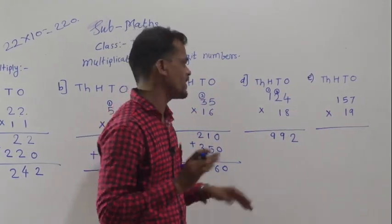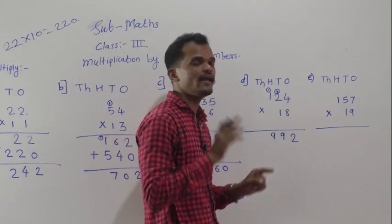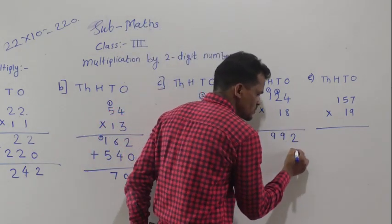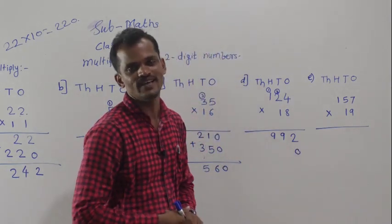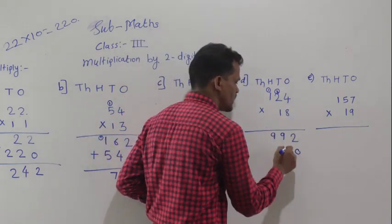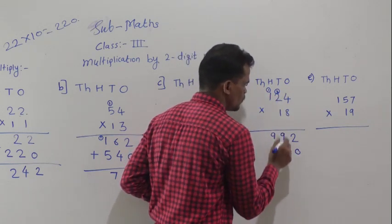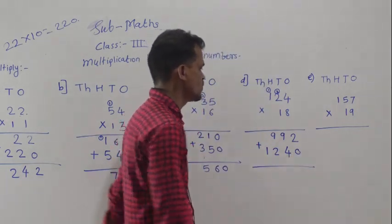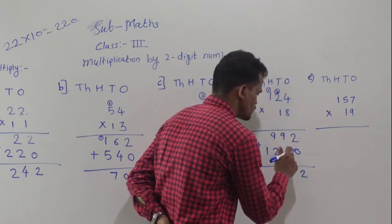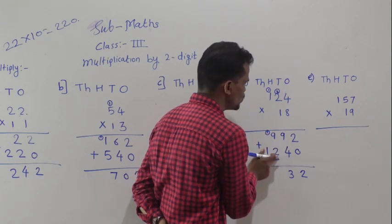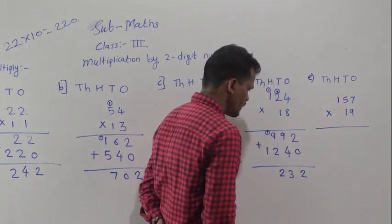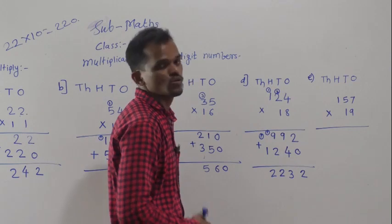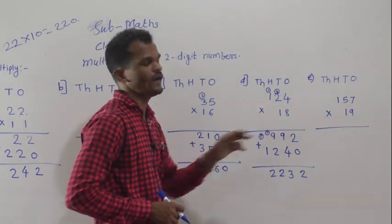Next step: multiply 124 by the tens digit. Before multiplying by 1, write 0 at the ones place and then multiply. 1 four is 4, 1 two is 2, and 1 one is 1. Now add the 2 numbers: 2 plus 0 is 2, 9 plus 4 is 13 with 1 carry, 9 plus 2 is 11 plus 1 is 12 with 1 carry, and 1 plus 1 is 2. So 2252 is the product of 124 and 18.